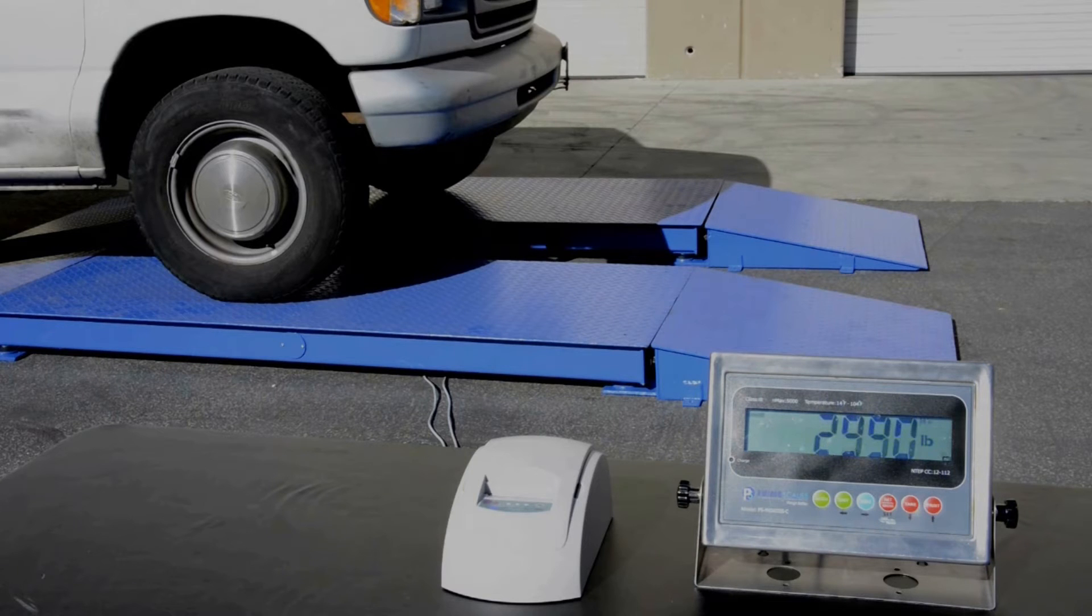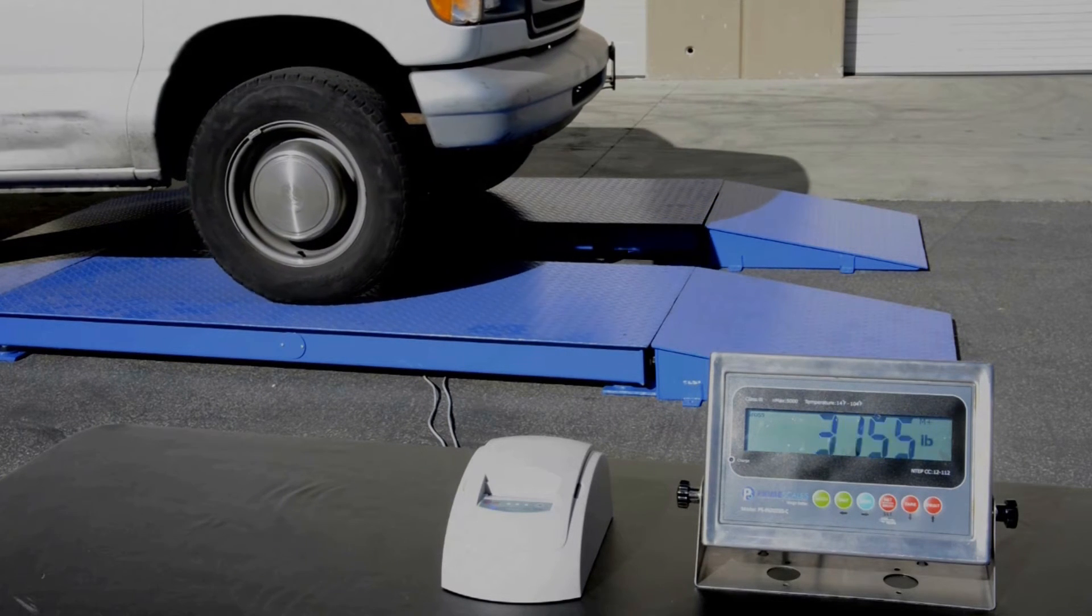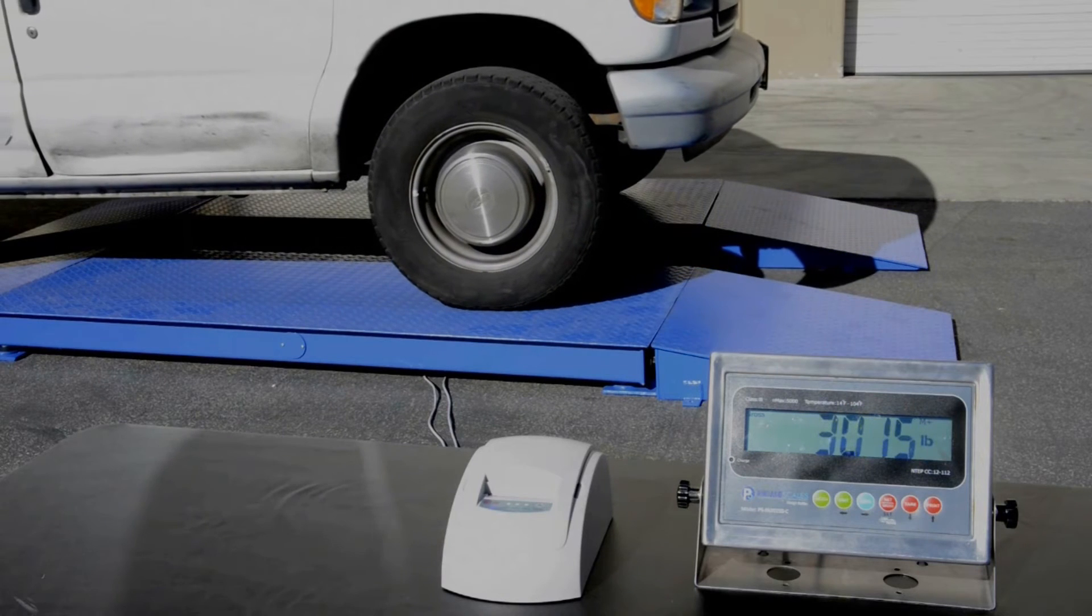Next, drive on the second axle and then stop. The indicator will show the weight of the second axle.